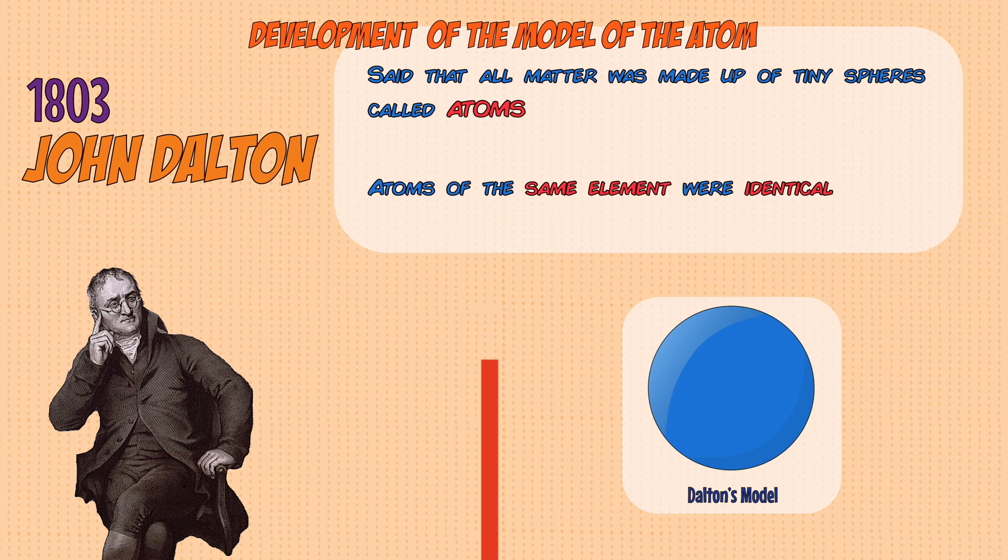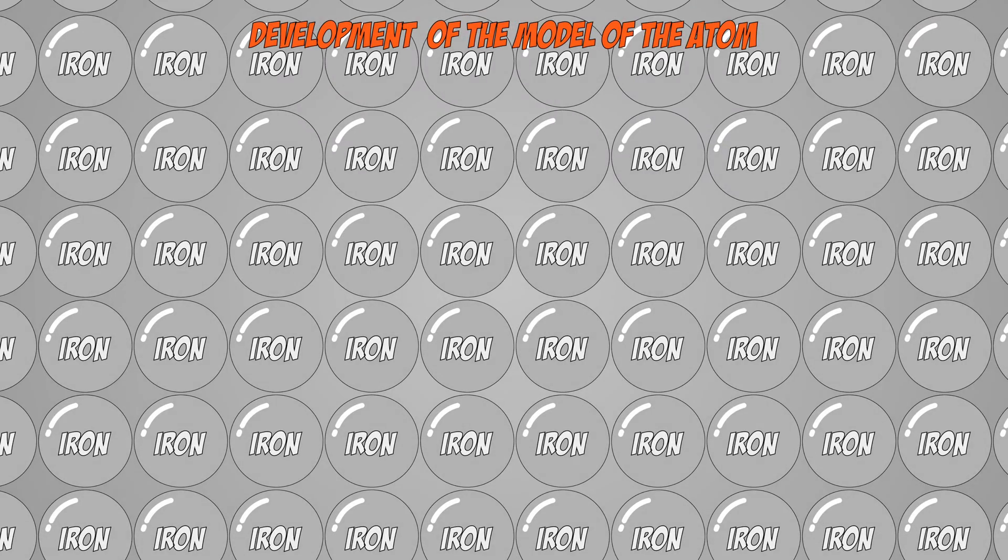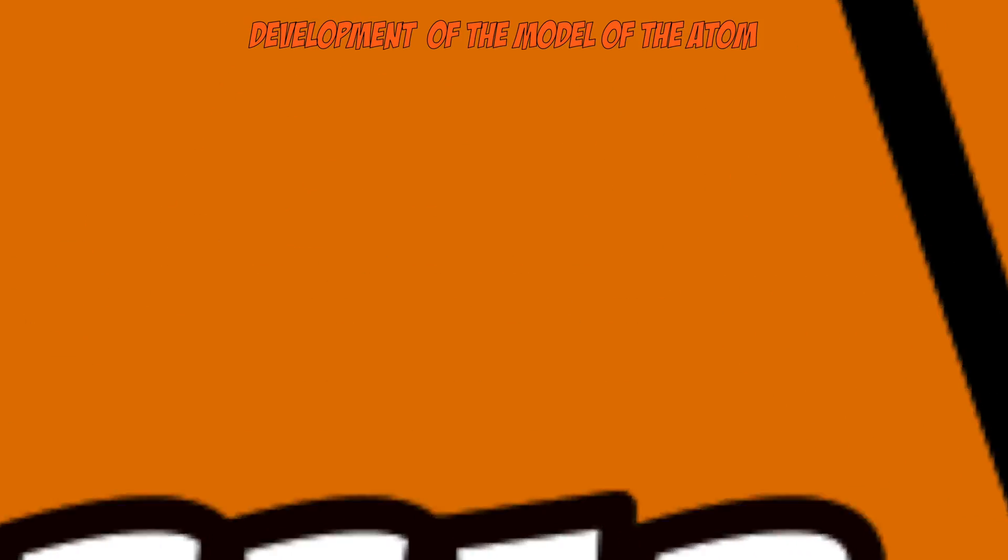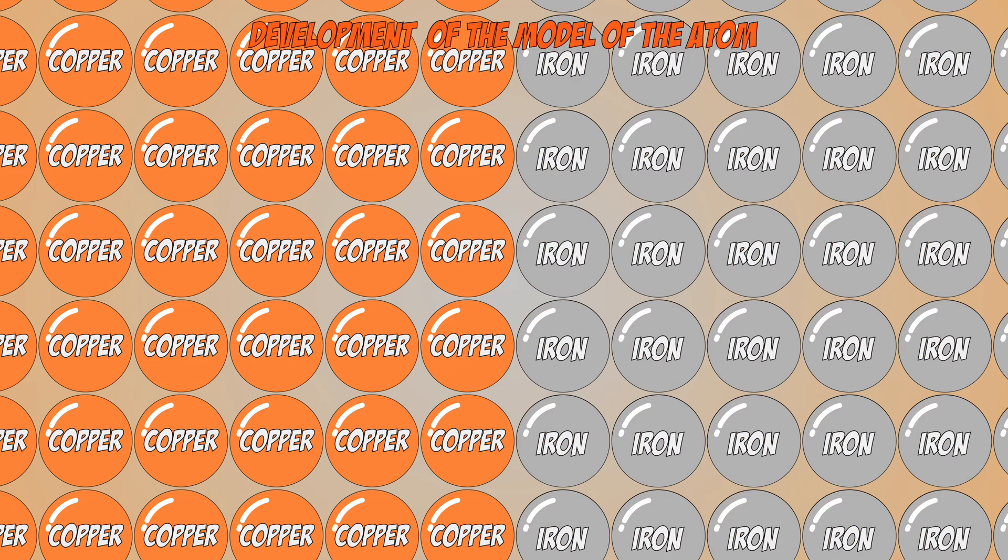He also said that atoms of the same element were identical. So if you had a block of iron, he said that it only contained iron atoms and all of those atoms were the same. If you had a block of copper, however, the atoms would be identical to each other, but they would be different to the atoms of iron.